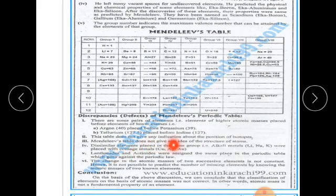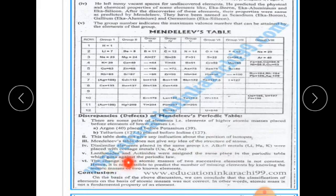Mendeleev's table does not give any idea about the structure of the atom. Additionally, dissimilar elements are placed in the same group — for example, alkali metals like sodium and potassium are placed with coinage metals.